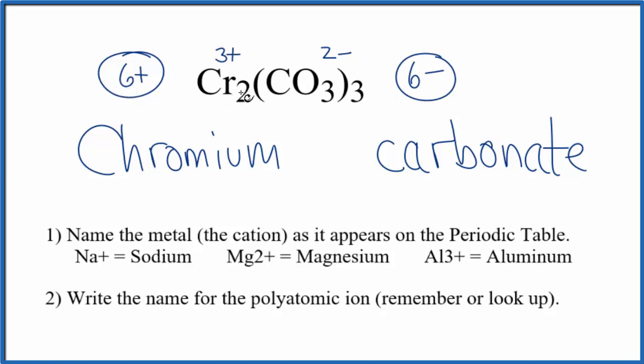So the ionic charge on each chromium atom is 3+. In the name, we write chromium(III) in Roman numeral in parentheses to show that each chromium atom has an ionic charge of 3+. That makes the name for Cr2(CO3)3 chromium(III) carbonate. This is Dr. B.